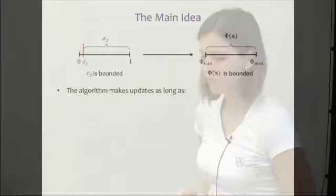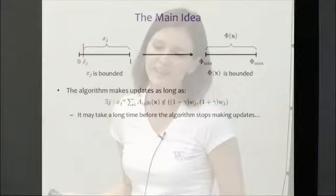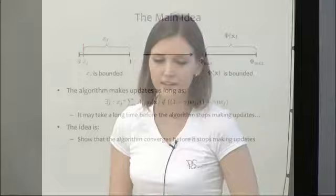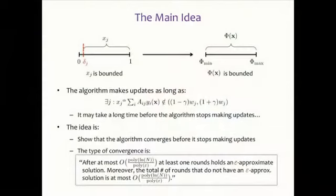The main convergence result: the algorithm makes updates as long as at least one KKT condition is not approximately satisfied. The key insight is that the algorithm may have converged before it stopped making updates. After at most a polylog number of rounds, at least one round holds an epsilon-approximate solution. The total number of rounds where we don't have an epsilon-approximate solution is bounded by the same polylog term.